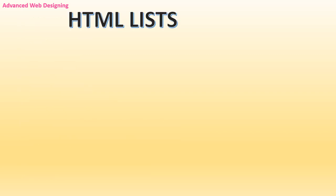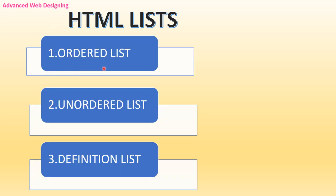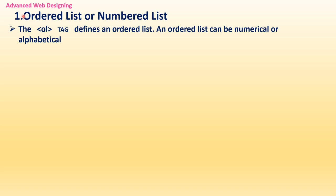HTML lists are used to specify lists of information. All lists may contain one or more list elements. There are 3 different types of HTML lists: ordered list, unordered list, and definition list. An ordered list, also called a numbered list, is a sequence of items — it can be a list of chapters for your coming exam, a list of instructions you need to follow, etc. The OL tag defines an ordered list. OL stands for ordered list and is a container tag. It is used to create a list of related items in a specific order.